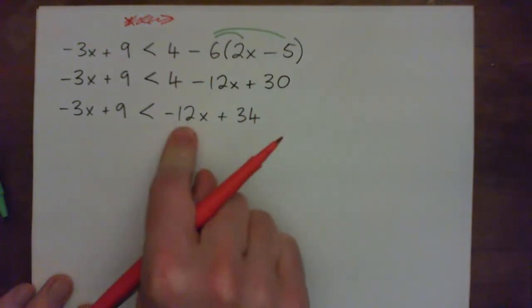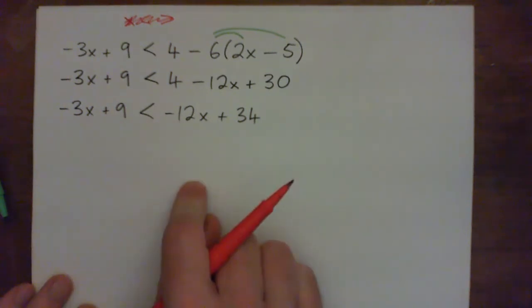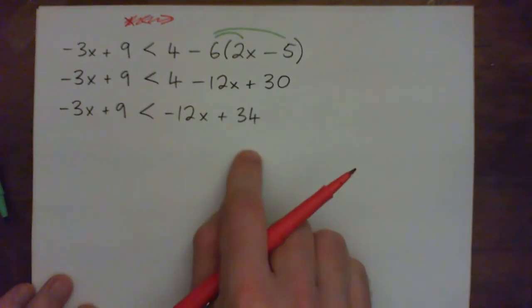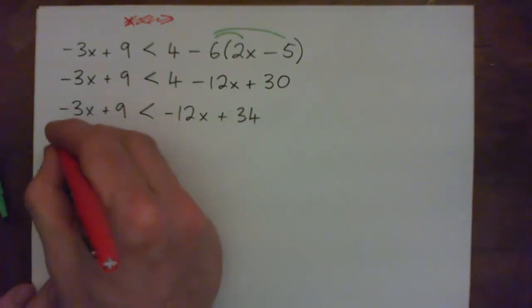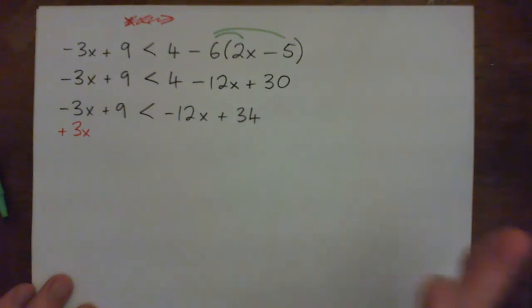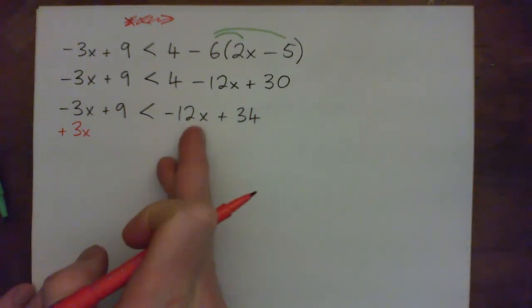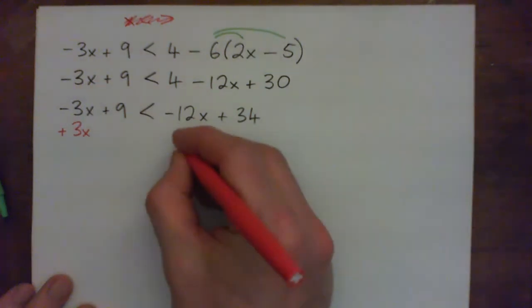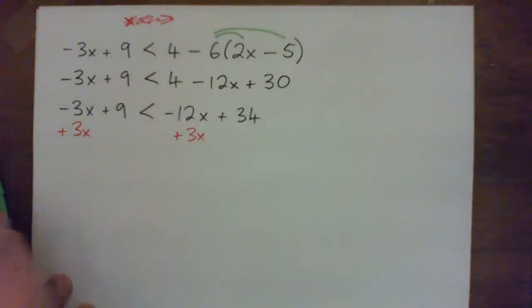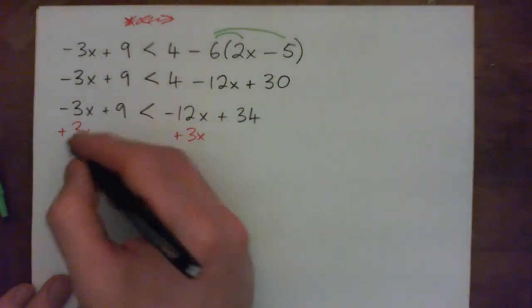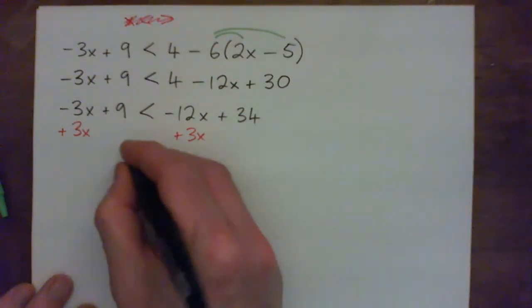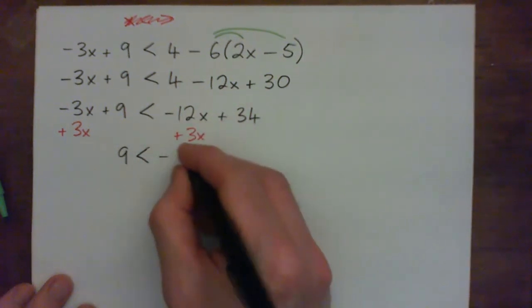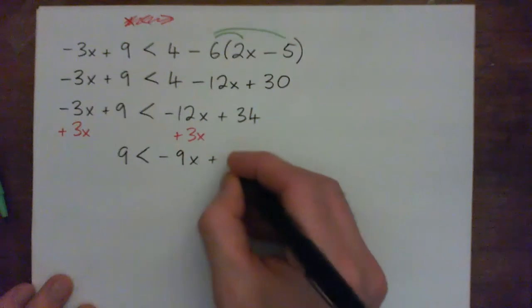Well, I could add 12x to both sides. I could subtract 9 from both sides. I could subtract 34 from both sides. Or I could add 3x. I'm just going to add 3x. It would be easier to add 12x, but I'm going to add 3x just to show what happens when you end up with a negative x term. So negative 3x plus 3x is 0. We get 9 here. Negative 12x plus 3x is negative 9x, and then plus 34.